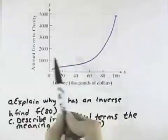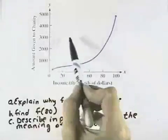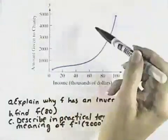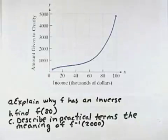If we check horizontal lines anywhere that we draw them, none ever cross more than once. And it also passes the vertical line test. So because it passes the vertical and horizontal line test, that means it has an inverse.